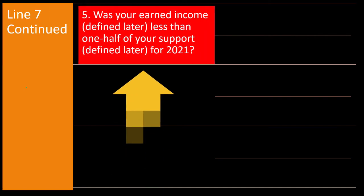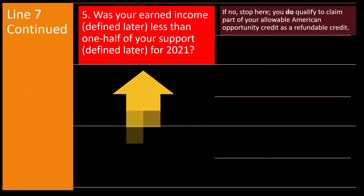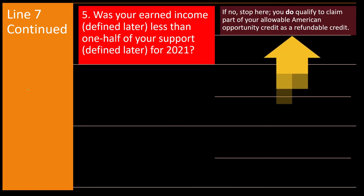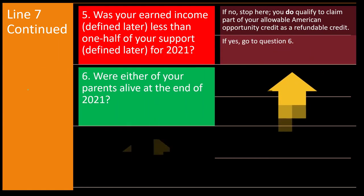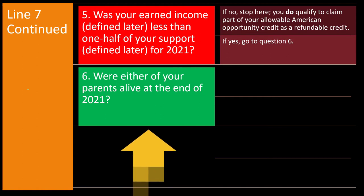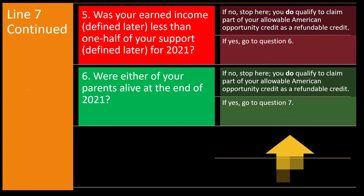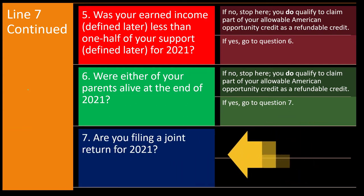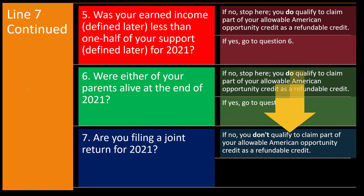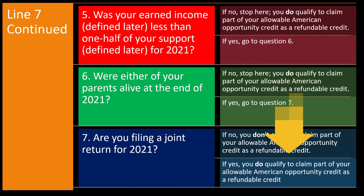Question 5 — was your earned income less than one half of your support for 2021? If no, stop here — you do not qualify for the refundable credit. If yes, go to question 6. Question 6 — were either of your parents alive at the end of 2021? If no, stop — you don't qualify as refundable. If yes, go to question 7. Question 7 — are you filing a joint return for 2021? If no, you don't qualify for the refundable credit. If yes, you do qualify.